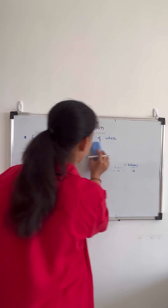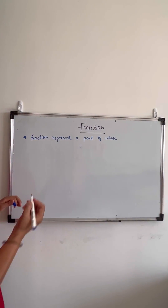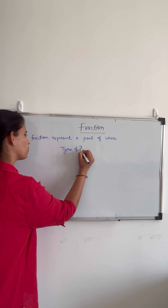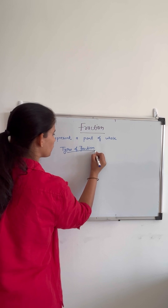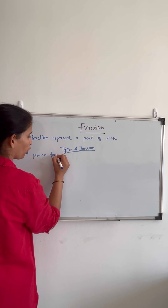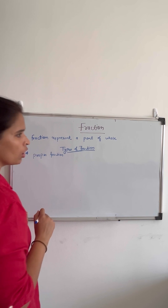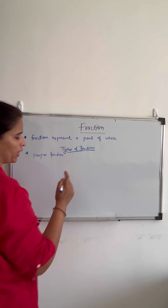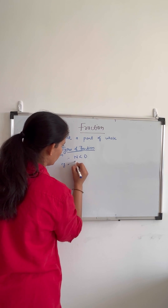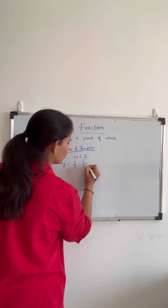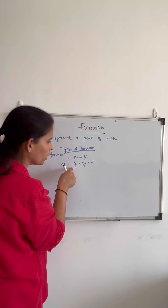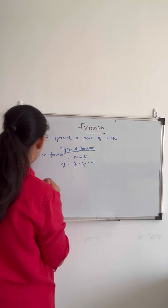Now, the types of fractions. There are different types of fractions. The first one is called proper fraction. Proper fractions are those fractions whose numerator is less than the denominator. For example, 3 by 7, 5 by 9, or 1 by 8 — the numerators are smaller than the denominators. This type of fraction is called a proper fraction.